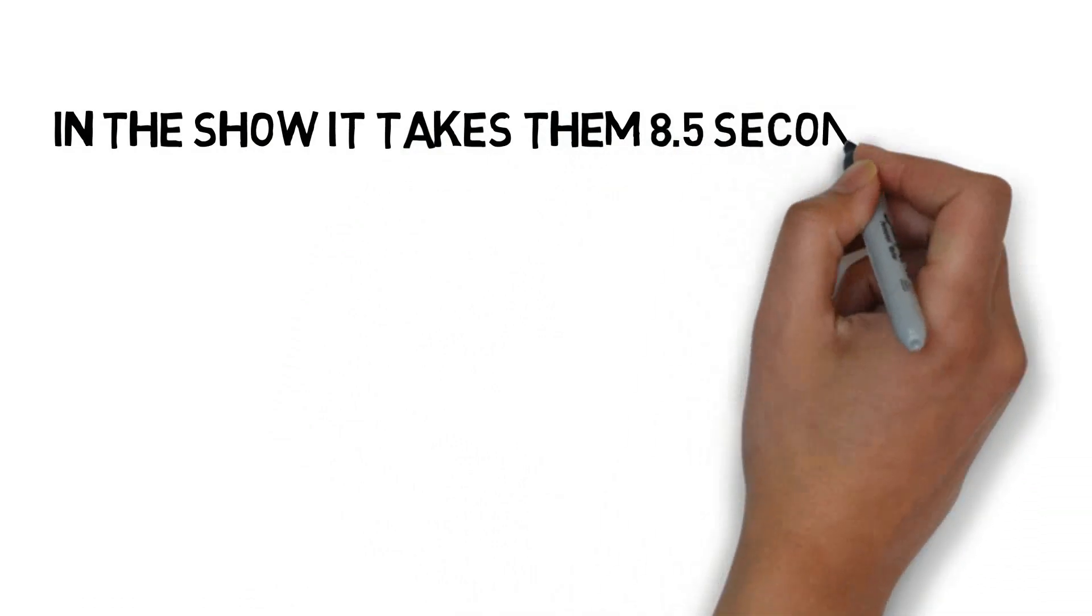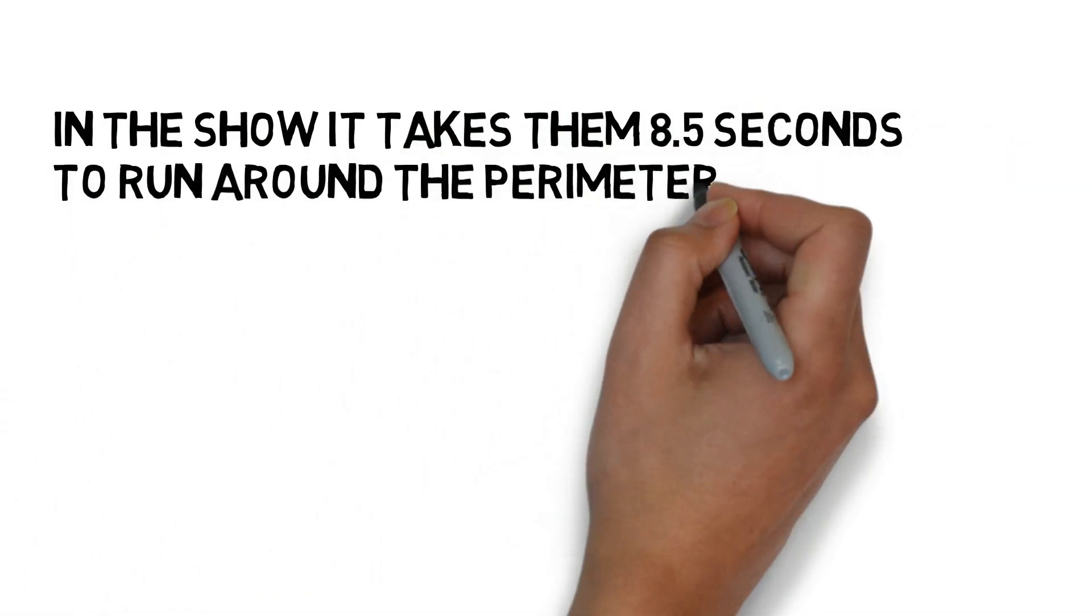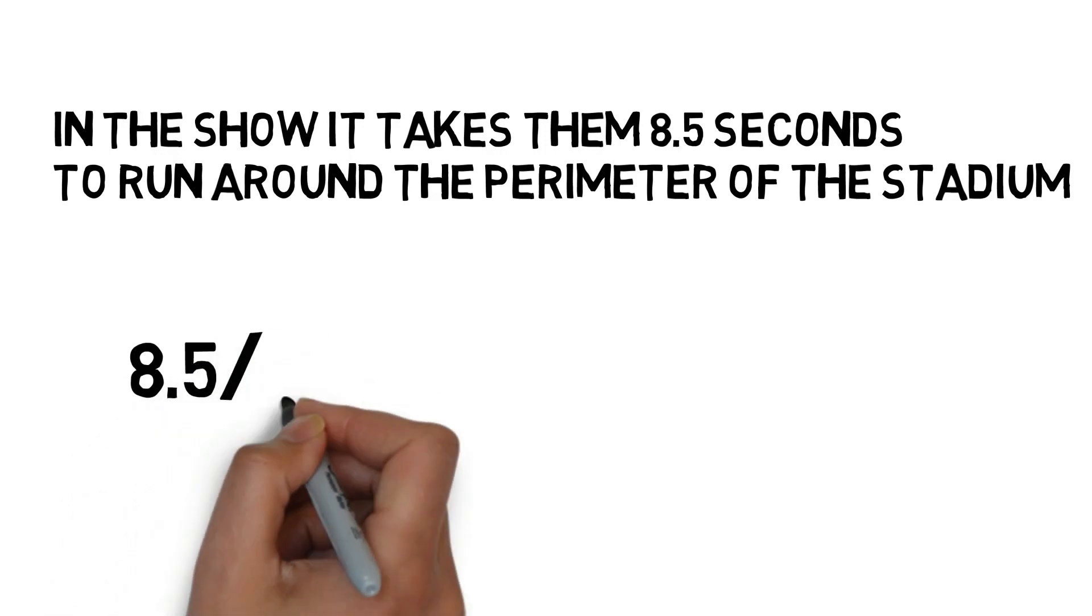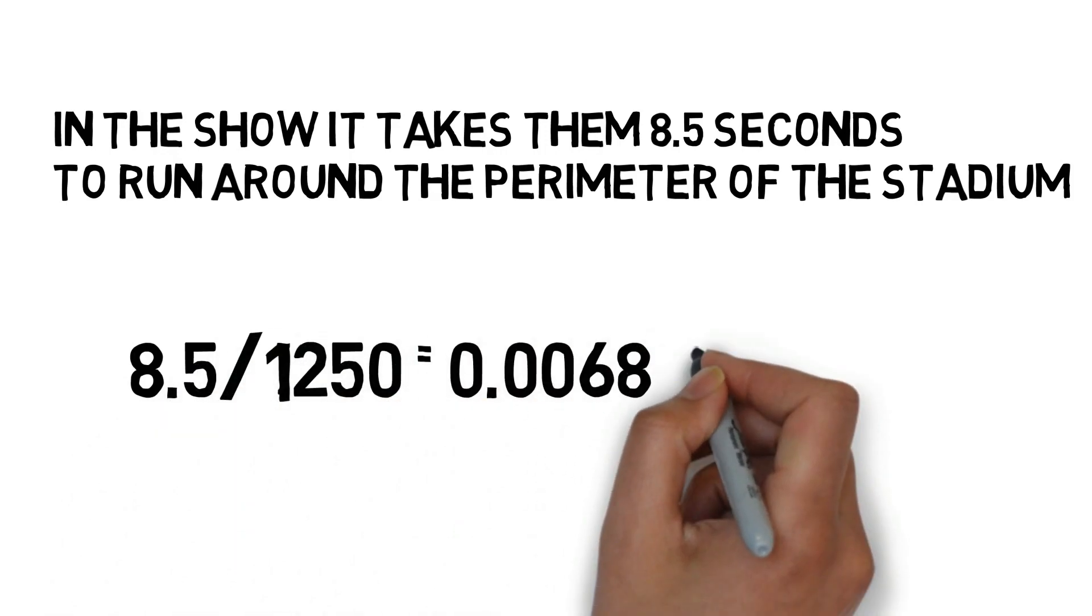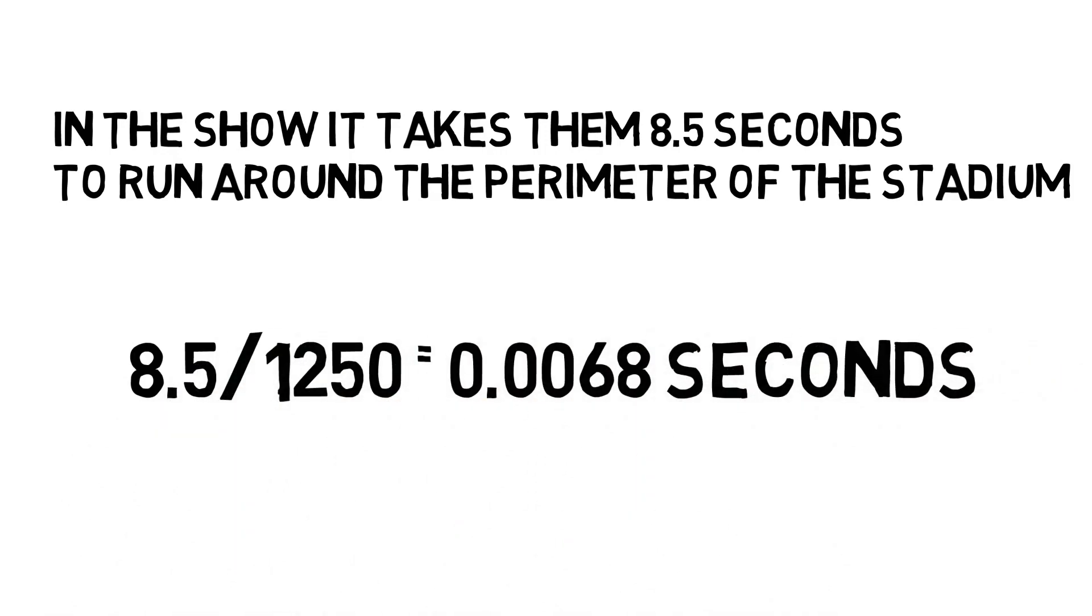In the show, it takes them 8.5 seconds to run around the perimeter of the stadium. So to find how much time this scene really took place over, we divide 8.5 seconds by 1,250 which is Barry's perception of time to get 0.0068 seconds.